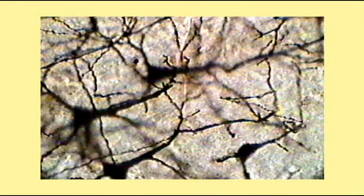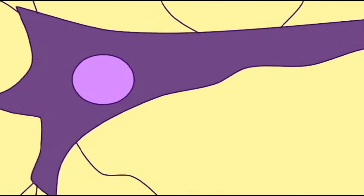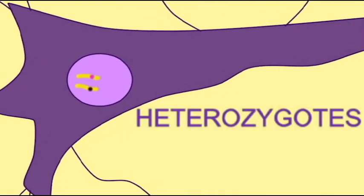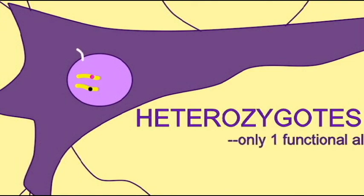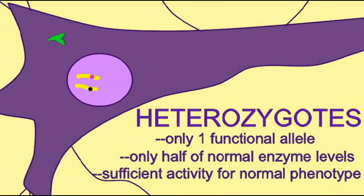A heterozygote with one functioning allele and one mutant non-functional allele will still be able to encode functional enzyme hexosaminidase A. They will be able to break down sphingolipids, since a little enzyme goes a long way. And since toxic byproducts will not develop, they will have the normal phenotype, even with only half the normal amount of enzyme.